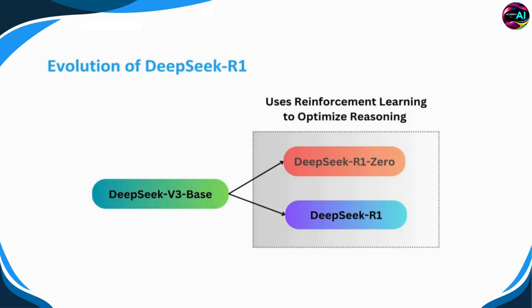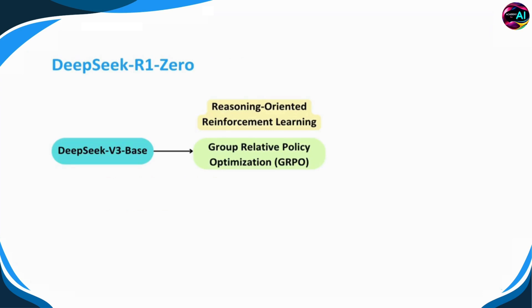It wasn't released as a standalone model. DeepSeek actually launched two models: R1-Zero and R1. Both leveraged reinforcement learning to enhance reasoning capabilities. First, let's take a quick look at R1-Zero, the precursor to R1. R1-Zero builds on DeepSeek V3 base as its foundation and uses GRPO as the reinforcement learning framework to enhance reasoning performance.